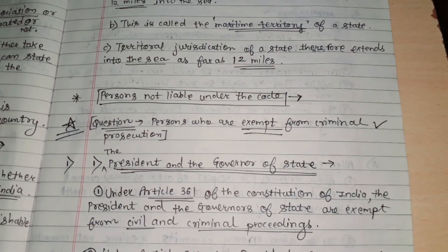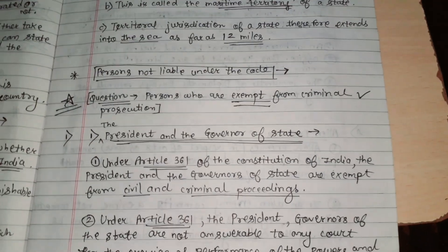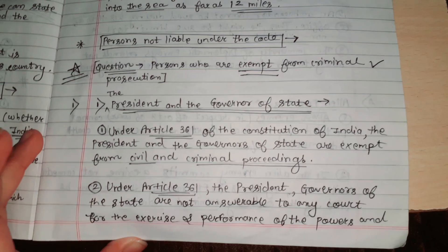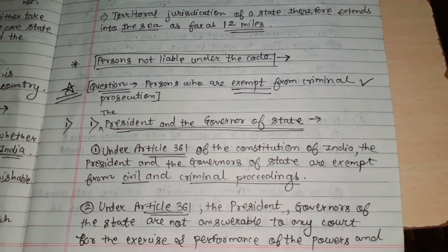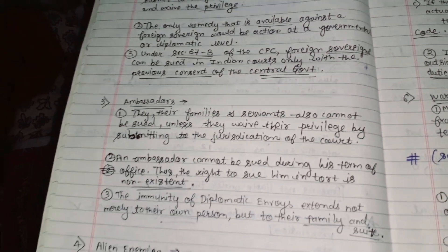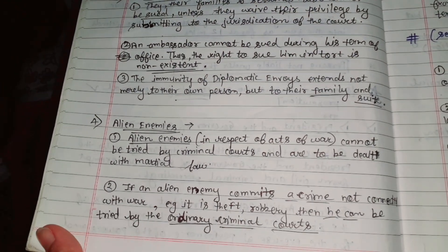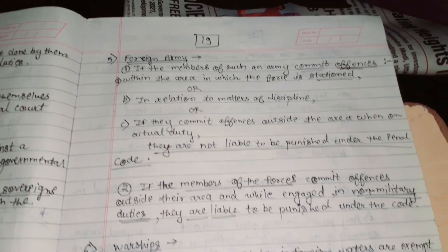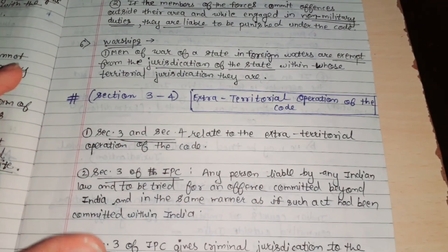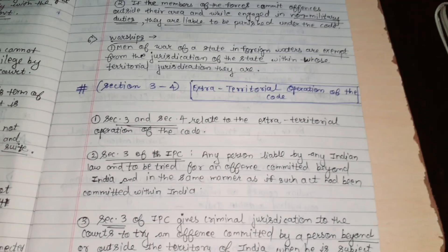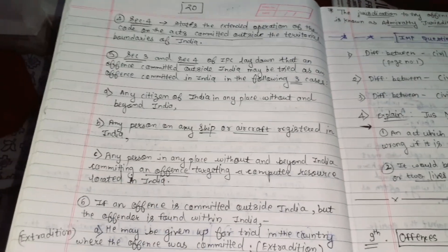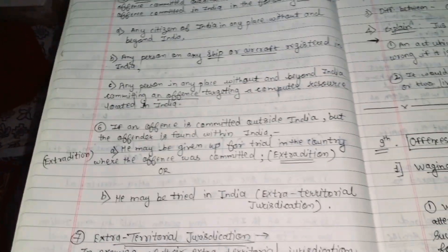Then we have seen the persons not liable under the code — those who are exempt from criminal prosecution. First is the President and the Governor of the state, then foreign sovereign, ambassador, alien enemies, foreign army and warship. After that we have seen Section 3 and Section 4, which is about the extra-territorial operation of the code, and the meaning of extradition.